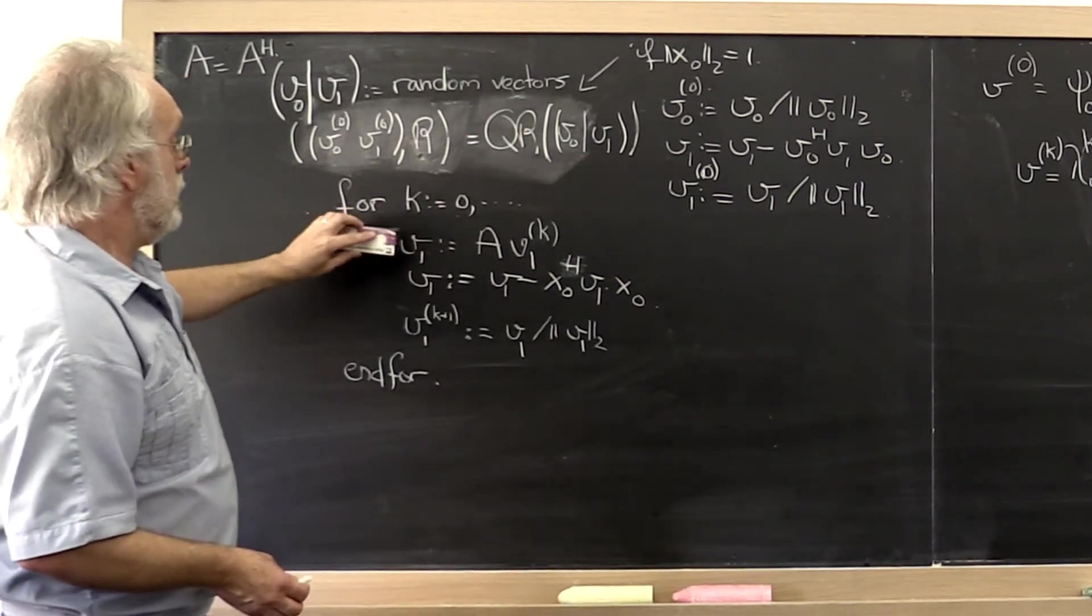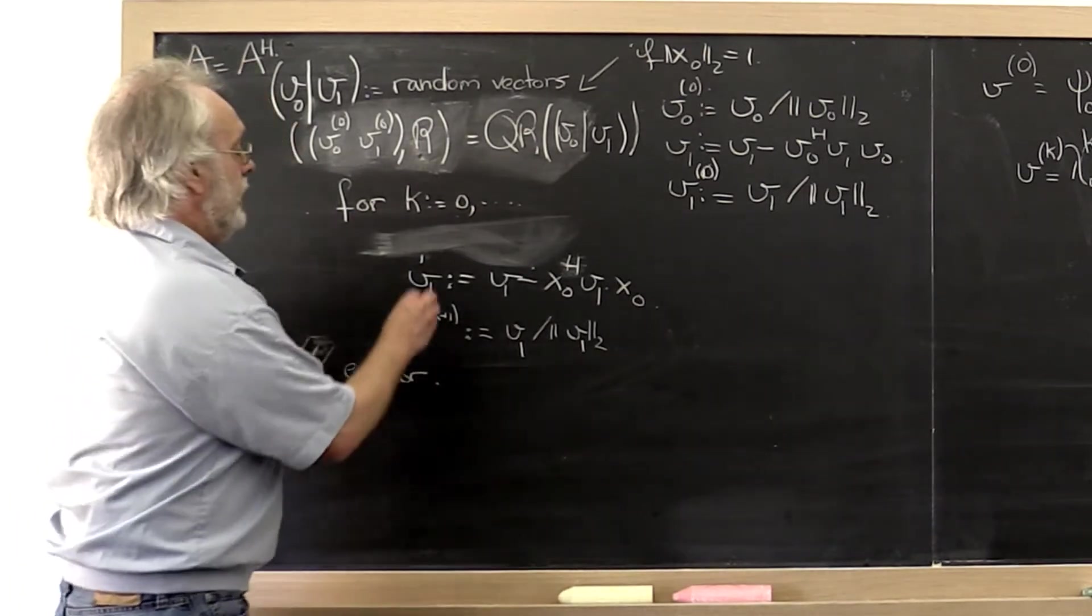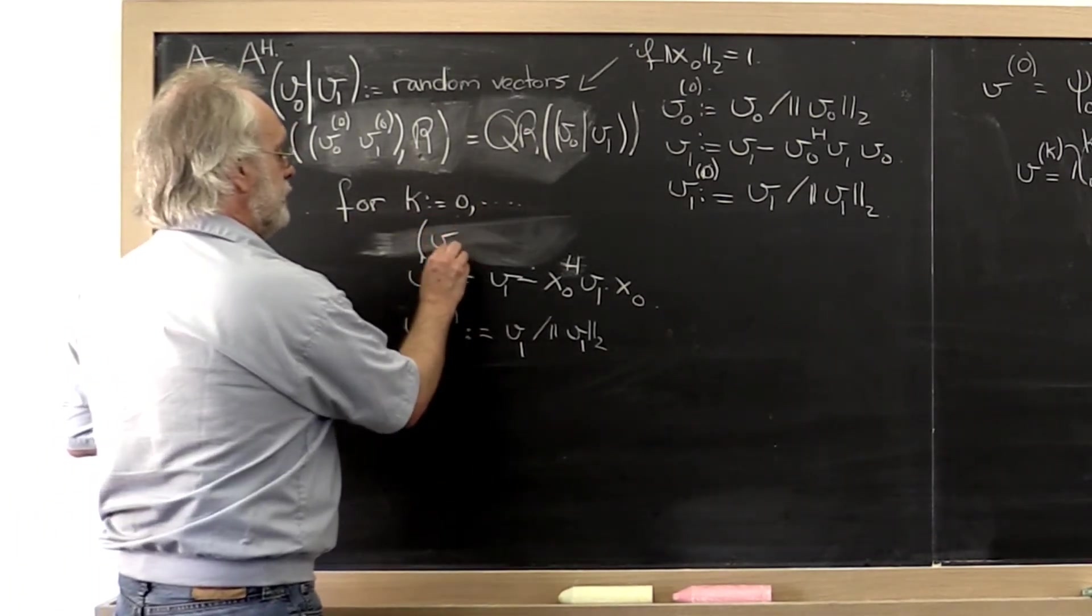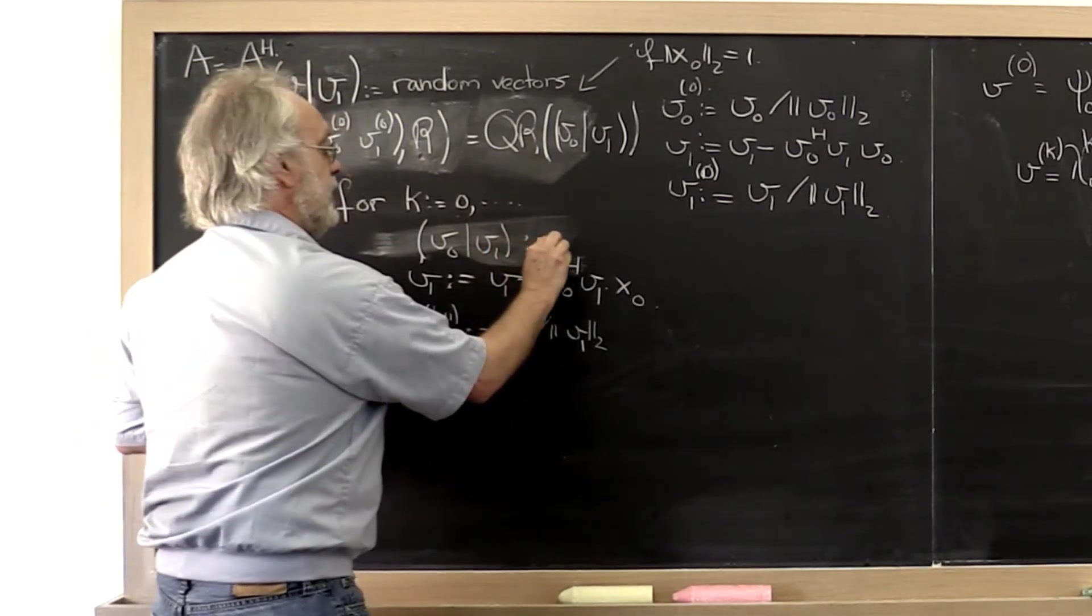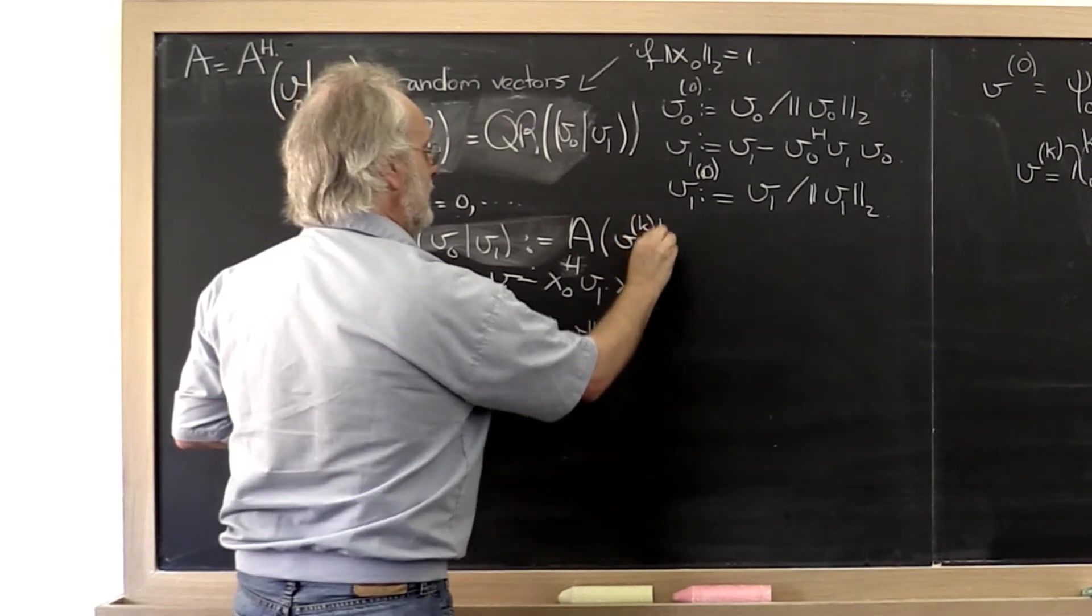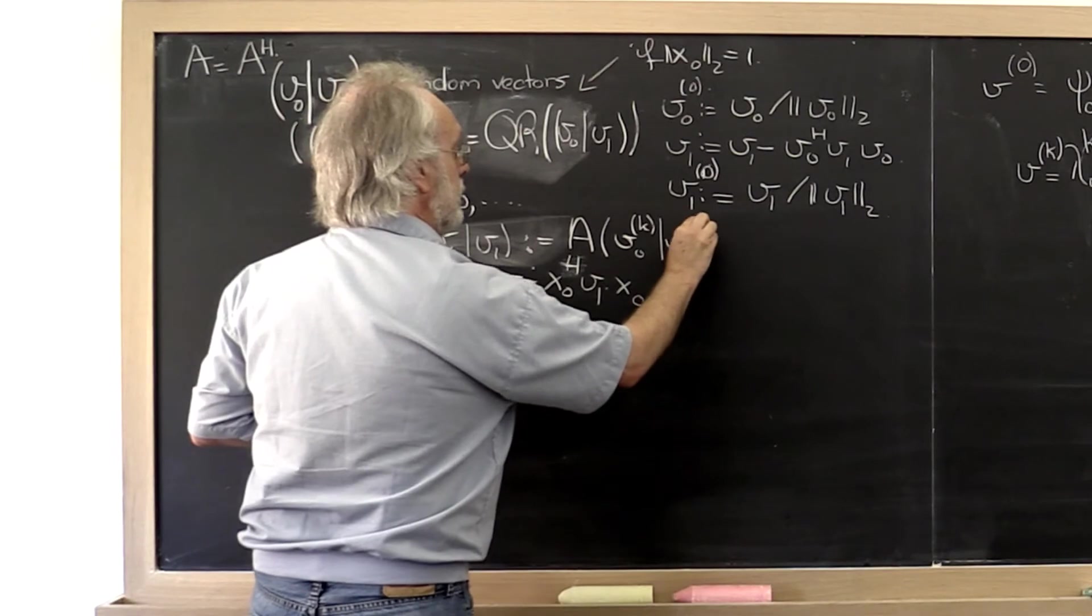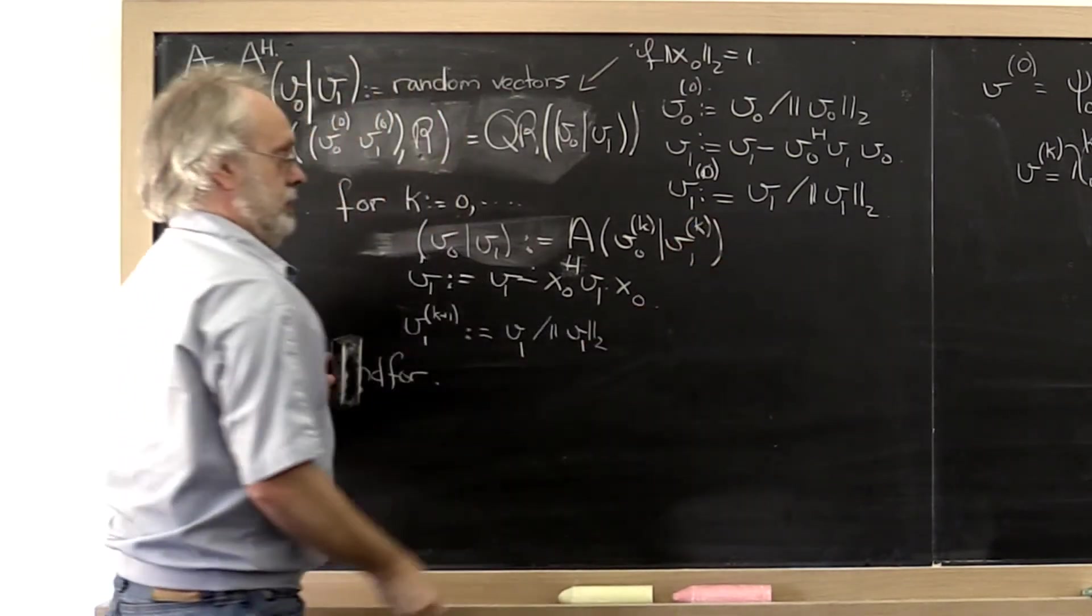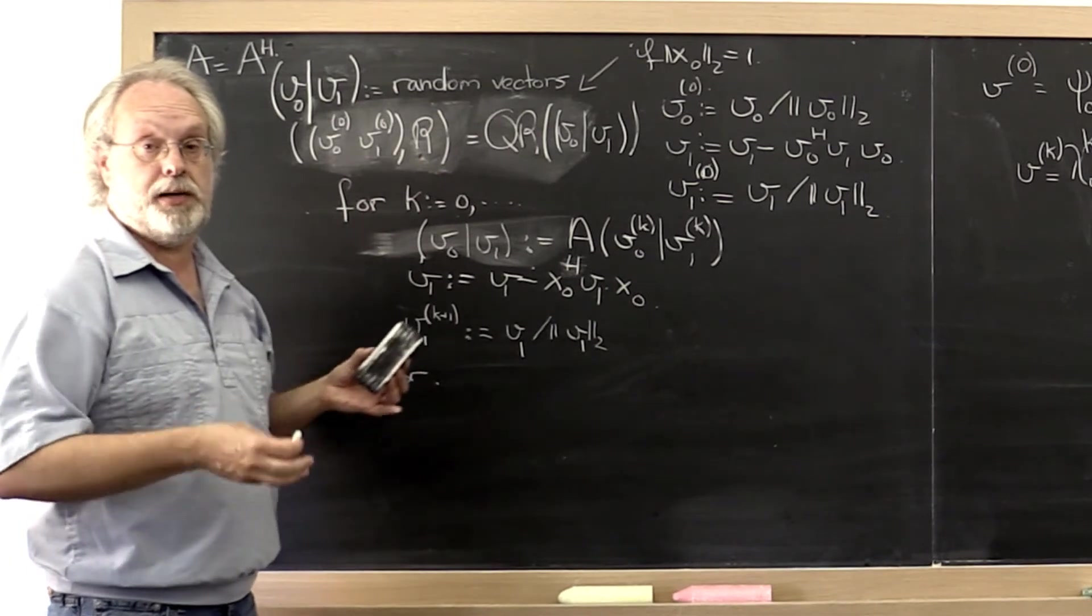Then down here what we could do is say, let's create temporary vectors v0, v1 by simultaneously multiplying both of these vectors that we're tracking by A. That's a matrix matrix multiply now. We like matrix matrix multiplies.